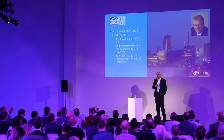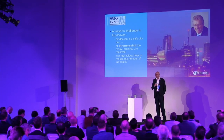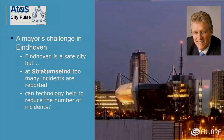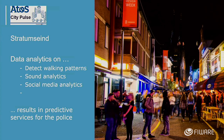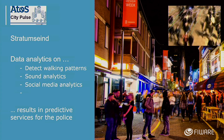Another solution Atos did — this one is from the Netherlands, from Eindhoven — there is a street called Stratumseind. It's one kilometer long with 55 bars, a lot of alcohol, and a high crime rate in the past. They installed cameras identifying the moving patterns of people — GDPR compliant, faces are pixelated — no personal information, but information on how people are moving.